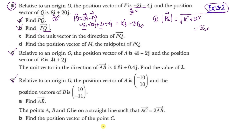The next part: find the unit vector in the direction of PQ. It's easy — if we divide the vector PQ by its modulus, that gives the unit vector. So our PQ vector is 10i plus 24j and the modulus is 26.